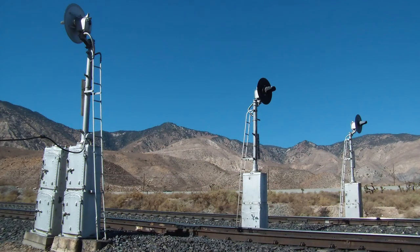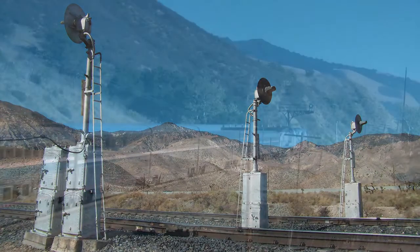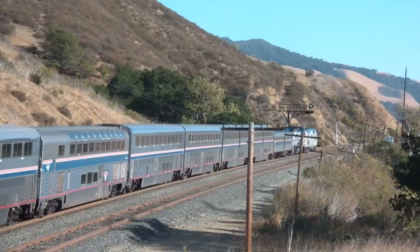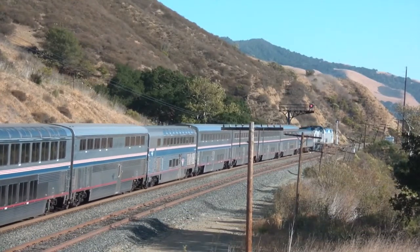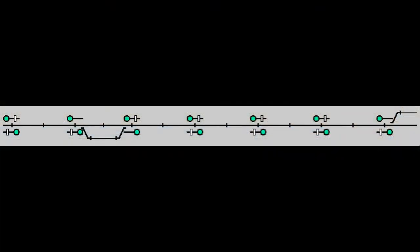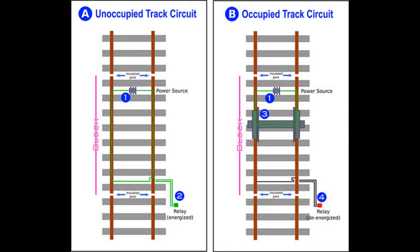Wayside railroad signals are a crucial part of railroad safety and efficiency. They are used to convey information to passing trains about whether they may proceed or if they must slow or stop. Rail lines are divided up into fixed sections called blocks, and wayside signals are typically placed at the boundaries between blocks. Within each block, a track circuit is used to detect the presence of a train, and this information is fed into the signal system, which is then used to control the aspects that the signals display.